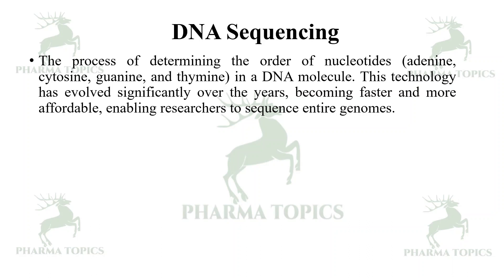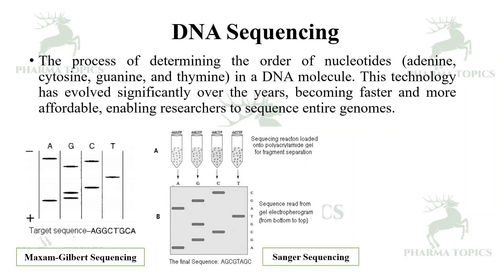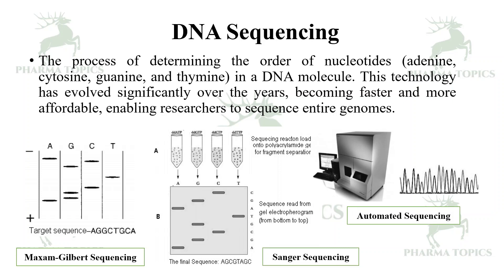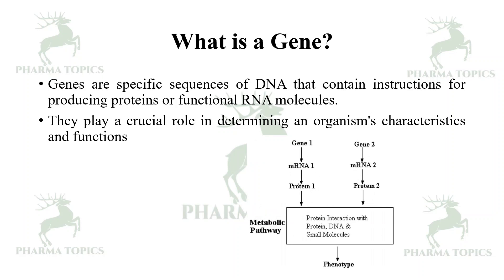This technology has evolved significantly over the years, becoming faster and more affordable, enabling researchers to sequence entire genomes. Early inventions were done by Maxam-Gilbert sequencing and the most famous Sanger sequencing; nowadays it is automated sequencing. Genes are specific sequences of DNA that contain the instructions for producing proteins or functional RNA molecules. They play a crucial role in determining the organism's characteristics and functions, determining the phenotype of the organism, and the disease pattern is based on the genetic pattern.